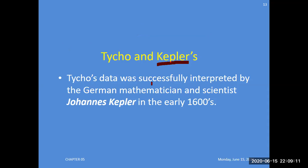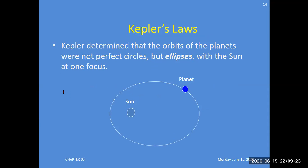Tycho's data was successfully interpreted by the German mathematician and scientist Johannes Kepler in the early 1600s. This is the most important law we study during the course of planetary motion. Kepler determined that orbits of the planets were not perfectly circular but ellipses with the Sun at one focus. Planets are moving in ellipses, not perfectly circular paths.